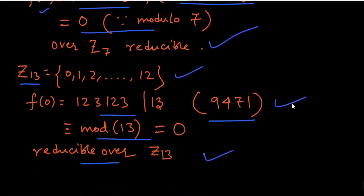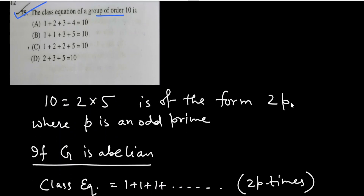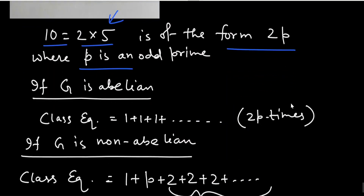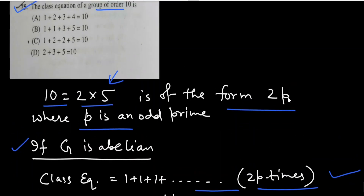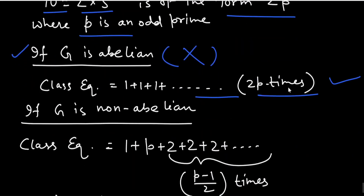The next question is a simple question about the class equation. It says: the class equation of the group of order 10 is... We can write the order of the group as 10 = 2 × 5, which is of the form 2p where p is an odd prime, with p = 5. Two cases may arise. If the group G is abelian, then the class equation is simply 1 + 1 + 1 + ... (2p times), but no options given are like this, so the abelian case is not possible.